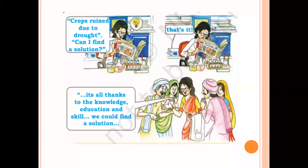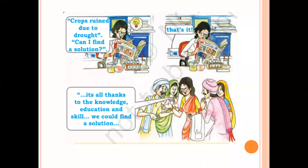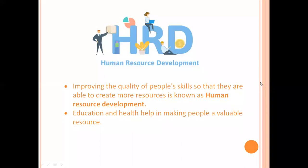We as human beings are directly or indirectly interdependent on each other. For example, we all are dependent on farmers for our food. Farmers provide us food grains, and scientists suggest various means to combat problems. When farmers were facing problems of crops ruining due to drought, scientists helped them find a solution. So directly or indirectly, we all are dependent and interdependent on each other.